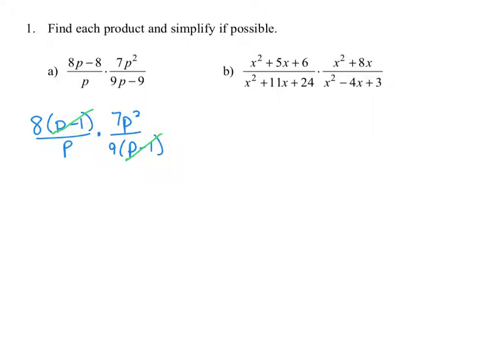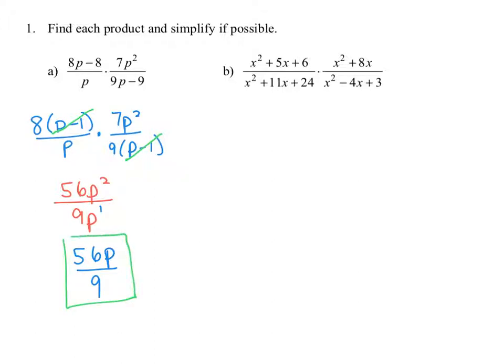Let's simplify the result. Multiplying the numerators together: 8 times 7p squared is 56p squared, and p times 9 is 9p. Now using the quotient rule for exponents — we have p squared in the numerator and p to the first in the denominator. Subtracting those exponents, we can write this as 56p to the first power in the numerator over 9. That is our final simplified form.